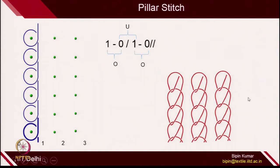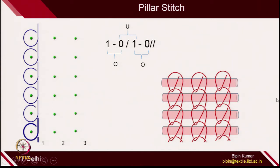To make a fabric, the wales have to be connected together. When you give pillar stitch alone, you cannot create a fabric — you need some other mechanism to hold the wales. One such mechanism is using floating yarns in the weft direction: each floating weft carries and connects all the wales of the fabric. This is called weft inlays. Each floating weft actually connects all the wales, and in this way the fabric becomes stable. Otherwise, with only a pillar type of loops, the fabric cannot be created — you need other overlaps and underlap movements to connect these loops with other columns.